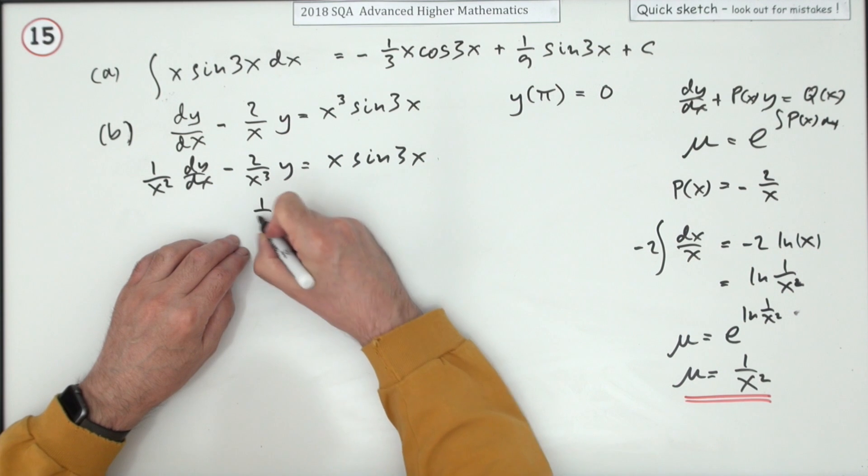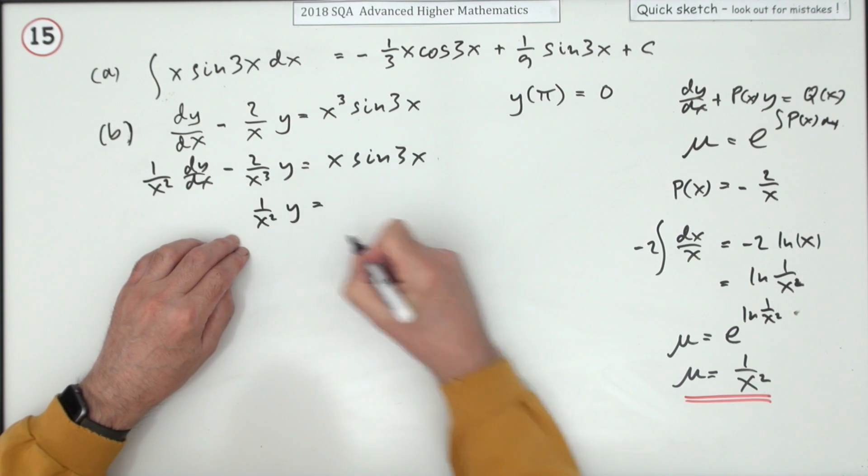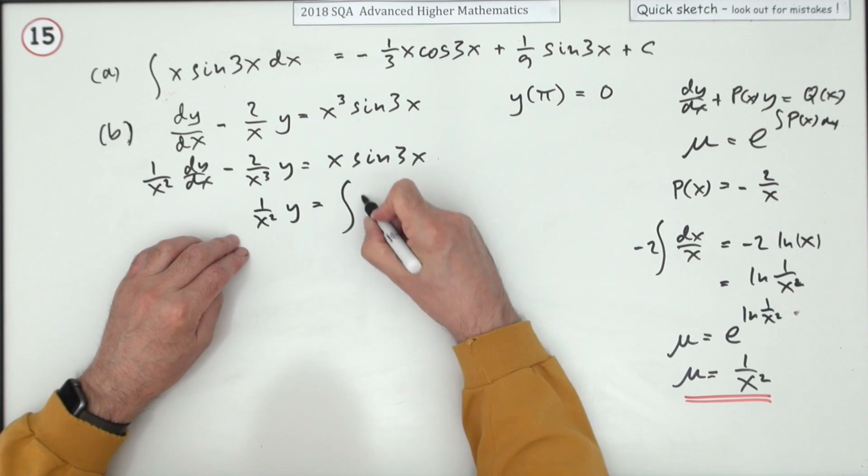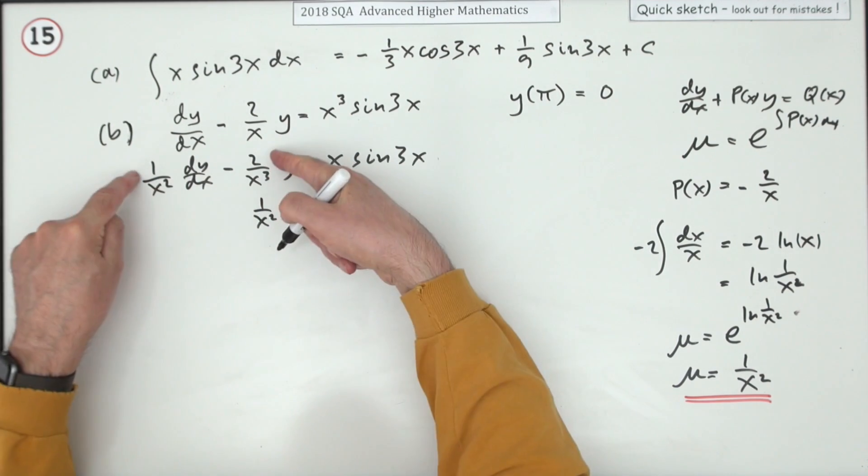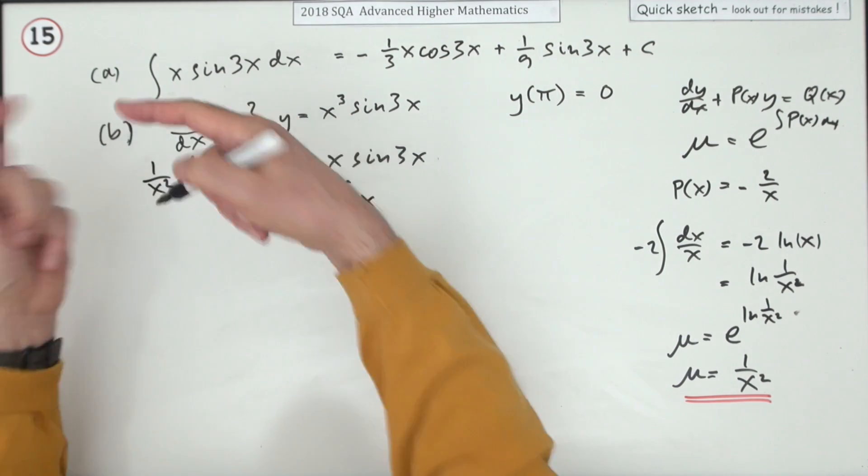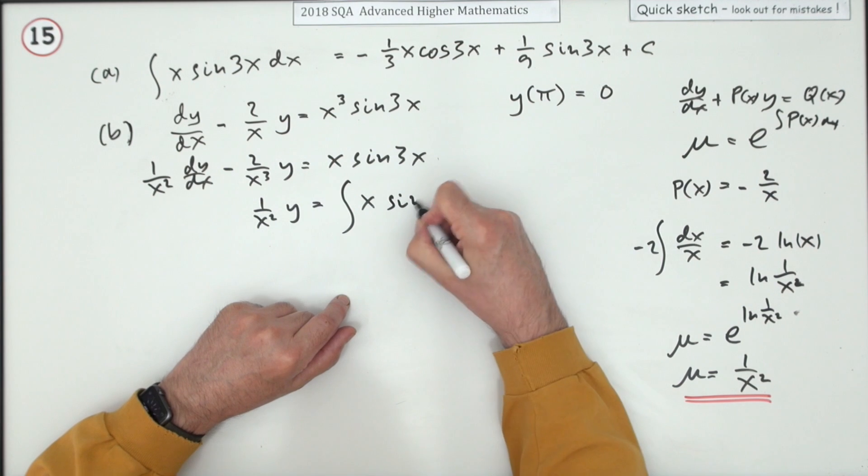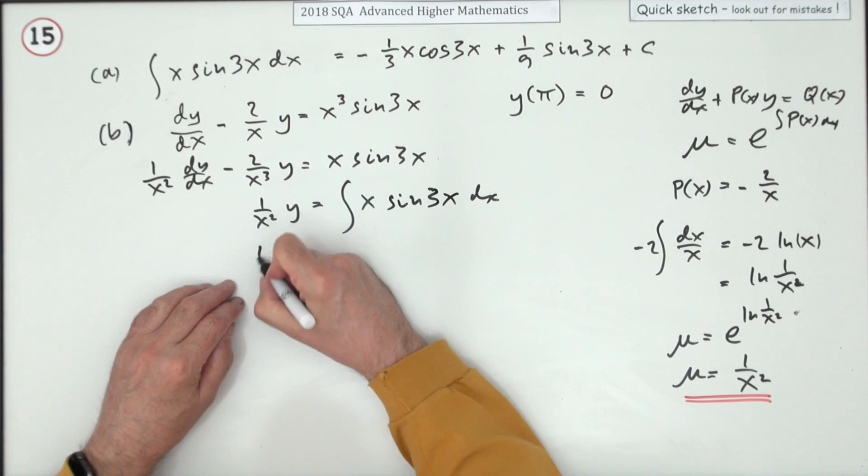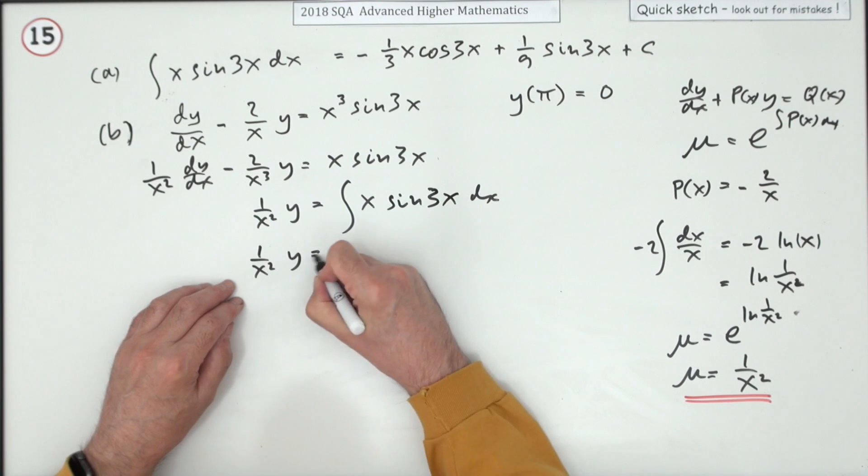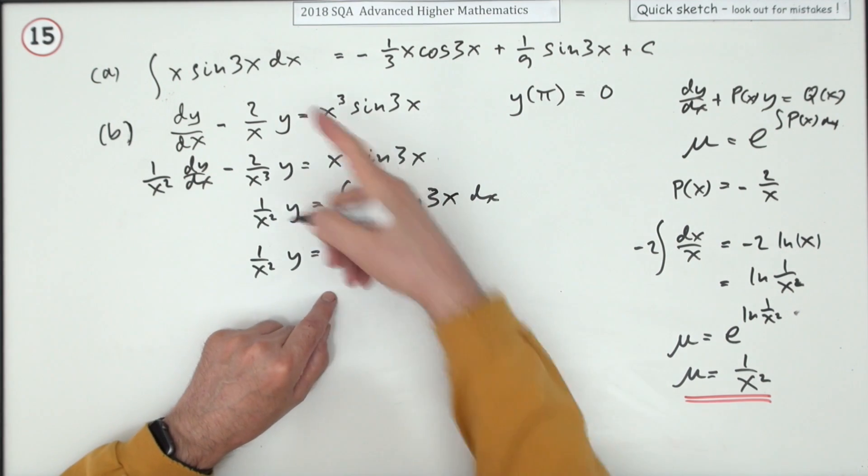I'll just go in with this part then: 1 upon x squared times y equals the integral of this side. That's integrating both sides because I would just undo that differentiation and put it back to where it was - sine 3x dx.